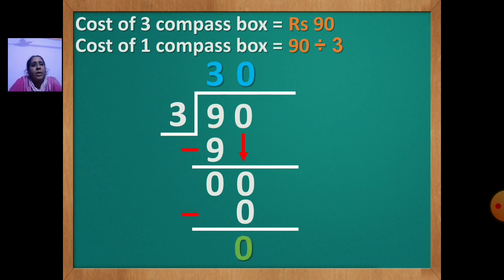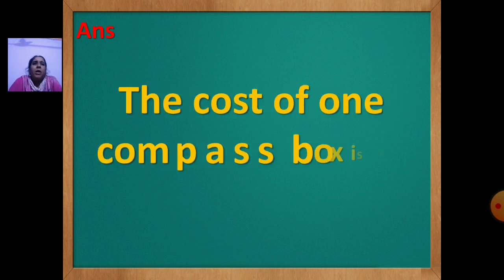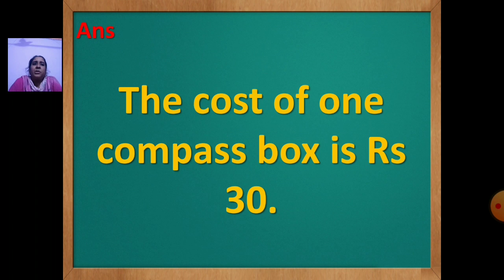Now you have to write the answer statement. The cost of 1 compass box is rupees 30. Answer is rupees 30.